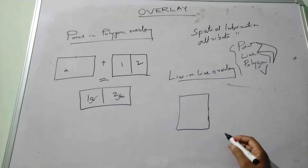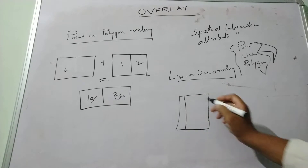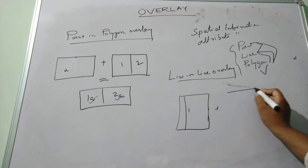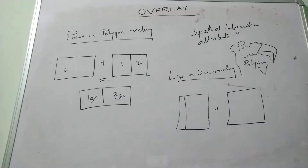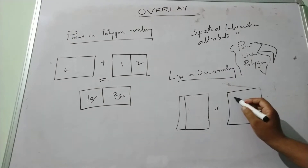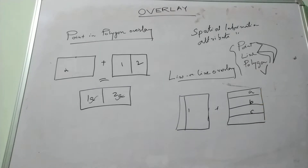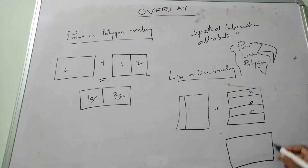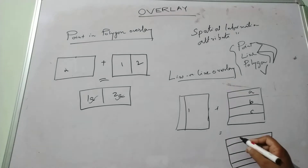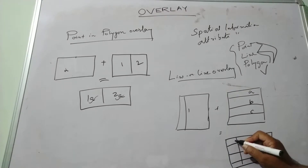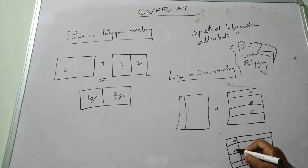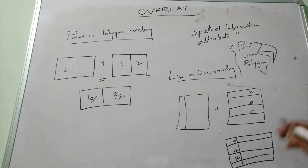For line-on-line overlay, suppose this is a layer where I have a line 1, and this is another layer where I am creating lines A, B, and C. When the output is created, it will produce features 1A, 1B, and 1C, where the line is intersecting between the two linear datasets.